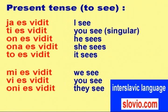Present tense — To see: YA ES VIDIT, TI ES VIDIT, ON ES VIDIT, ONA ES VIDIT, TO ES VIDIT, MI ES VIDIT, VI ES VIDIT, ONI ES VIDIT.